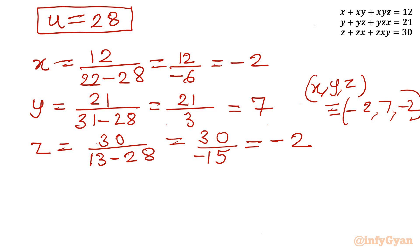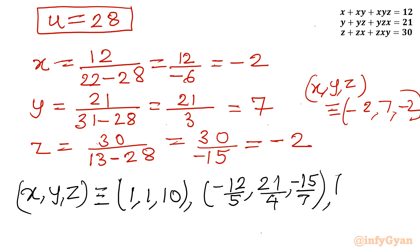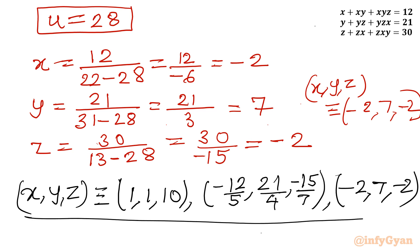Let me write the complete set of answers. The three ordered pairs (x, y, z) are: (1, 1, 10), (negative 12/5, 21/4, negative 15/7), and (negative 2, 7, negative 2). This is our final answer. I hope friends you will like this video. Thank you so much for watching. Do not forget to like, share, and subscribe. Bye-bye till the next video. Good luck and take care of yourself.